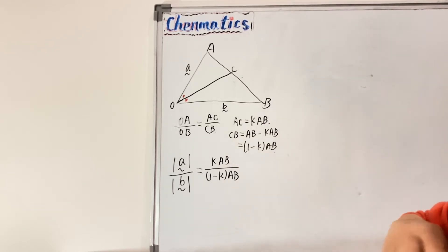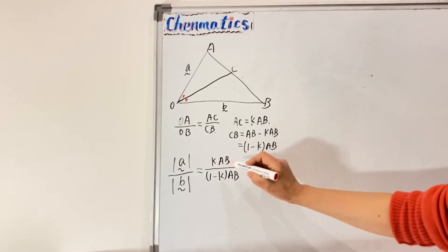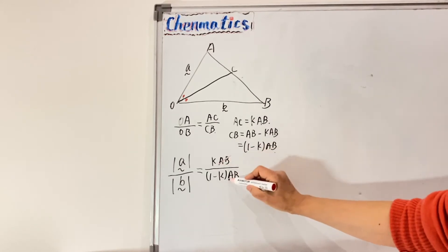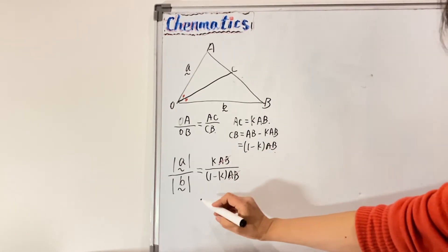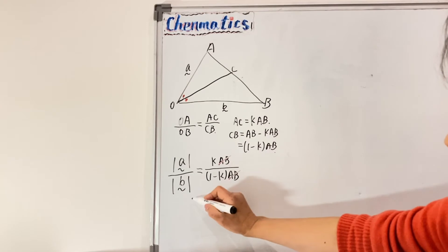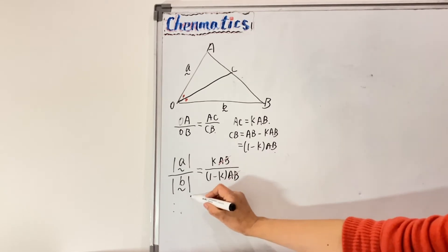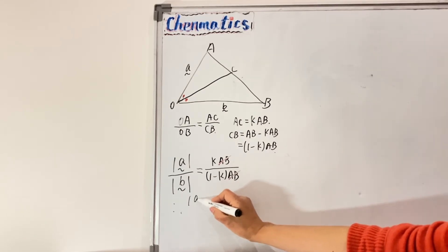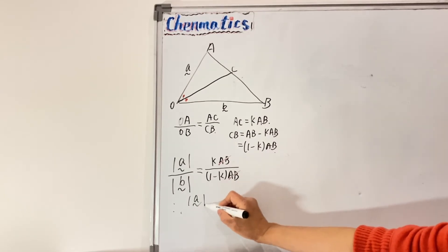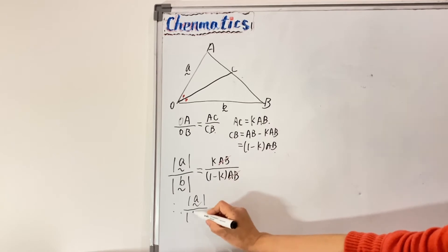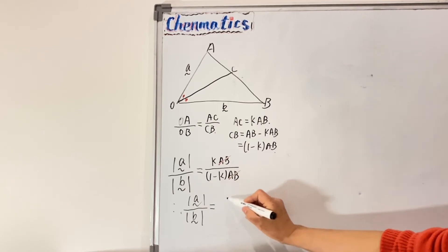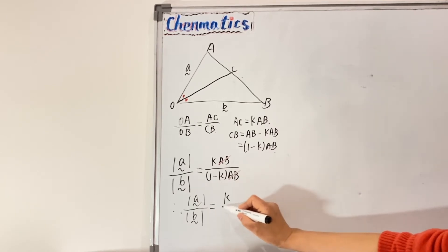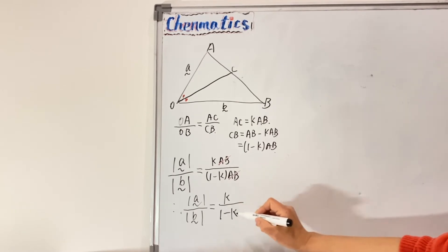So our aim is to prove that the magnitude of A over the magnitude of vector B equals K over (1 minus K). Now I'm going to show you how to prove that.